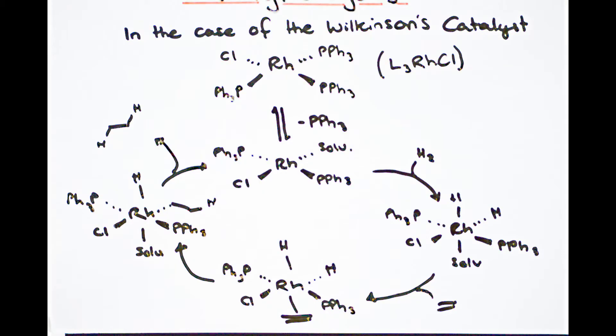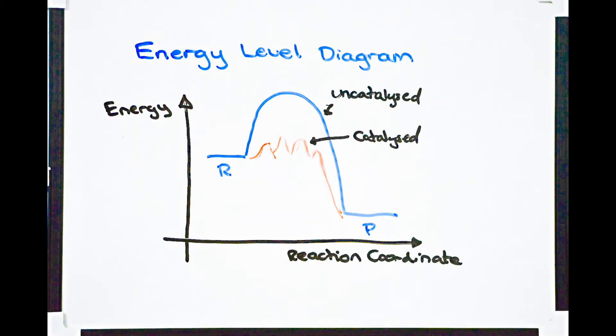Looking at the energy diagram for this particular reaction, we can see that the mechanism of a catalyst is such that it provides a pathway for our reaction to proceed via a lower energy intermediate.